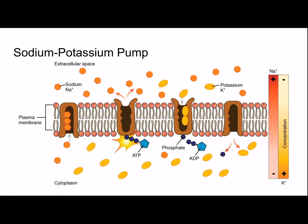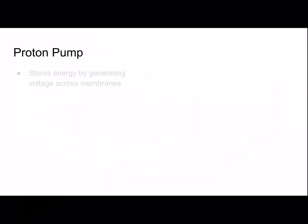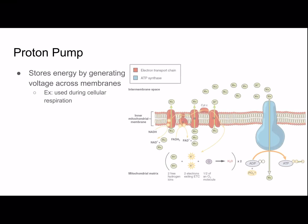That stored energy can later be used to do work. A proton pump stores energy by generating voltage across membranes, similar to the sodium-potassium pump, and is used during cellular respiration. Hydrogen ions are pumped against their concentration gradient, and this causes them to diffuse through ATP synthase. As they diffuse down, they power the bonding of a phosphate group to ADP to form ATP.